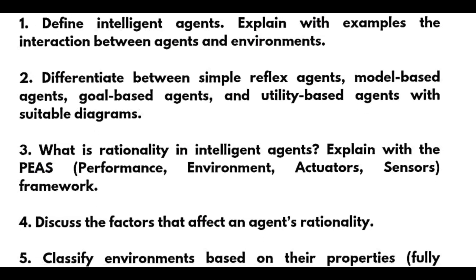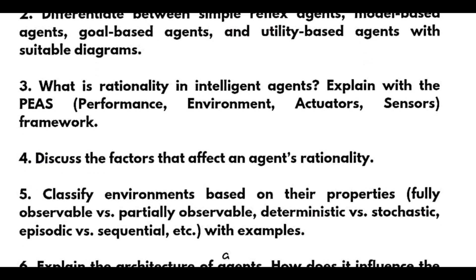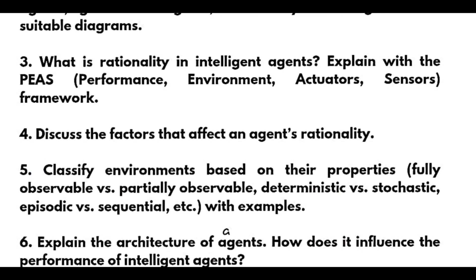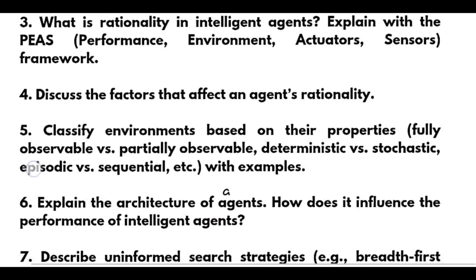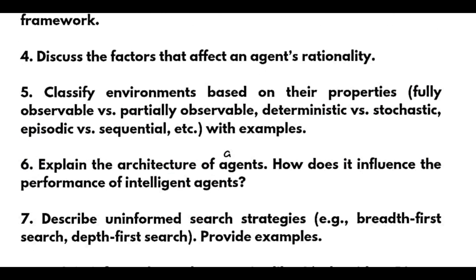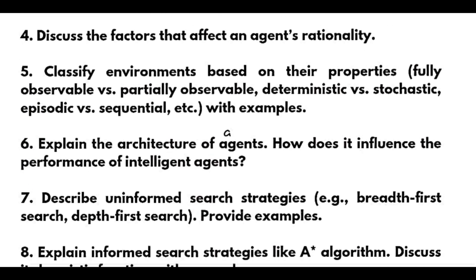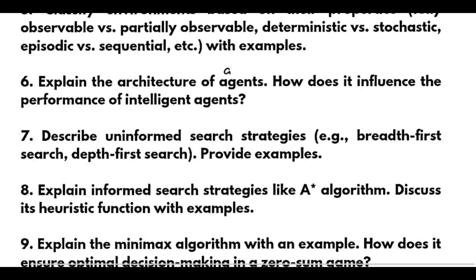Next, what is rationality in intelligent agents? Explain with the PEAS — Performance, Environment, Actuators, Sensors — framework, discuss the factors that affect an agent's rationality, and classify environments based on their properties: fully observable versus partially observable, deterministic versus stochastic, episodic versus sequential, with examples.